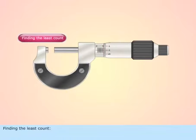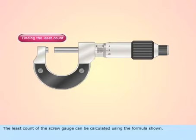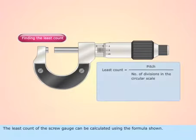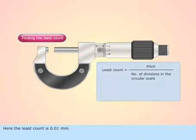Finding the least count. The least count of the screw gauge can be calculated using the formula shown. Here the least count is 0.01 mm.